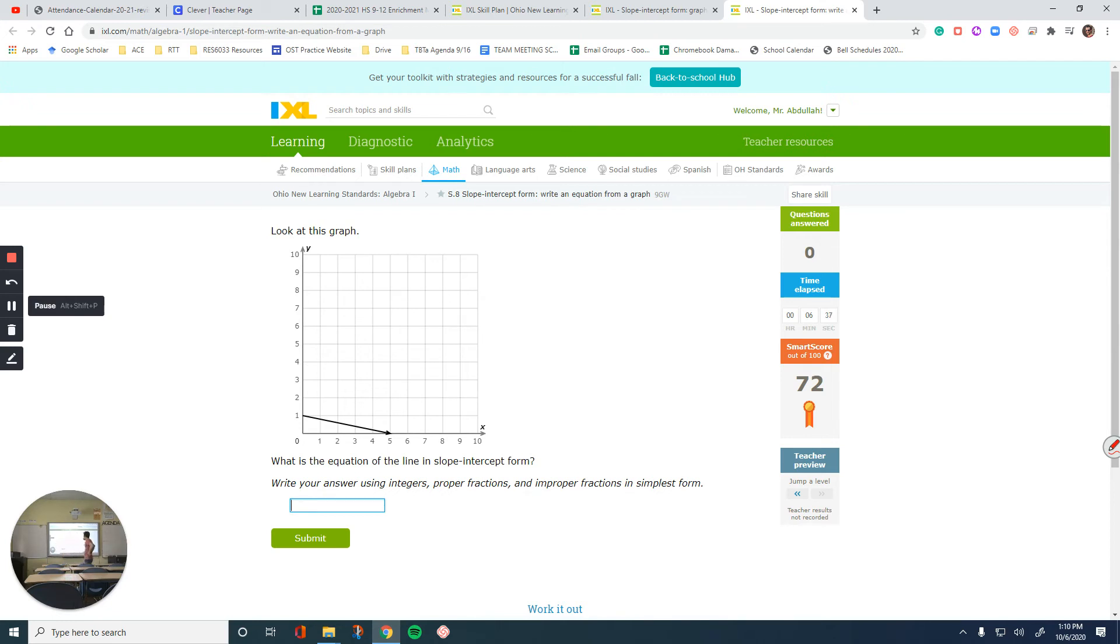Let's check this question out. It says look at the graph. What is the equation of the line in slope-intercept form? That means get the y by itself. Find your y-intercept, that's your starting point. b is what I want first, and it equals to 1.